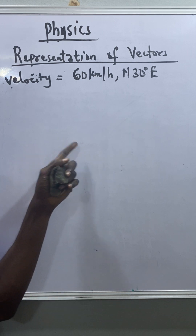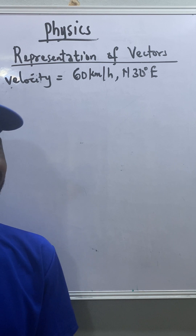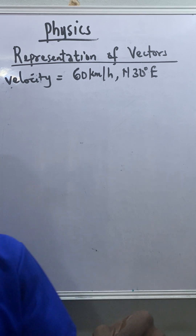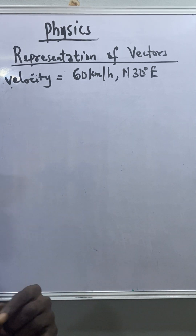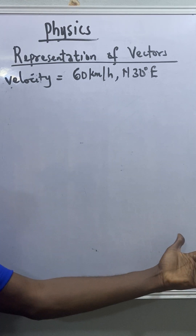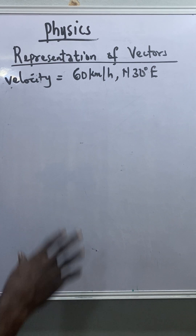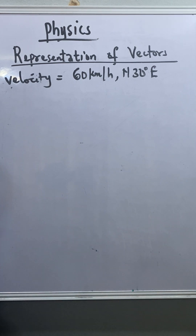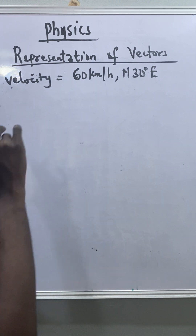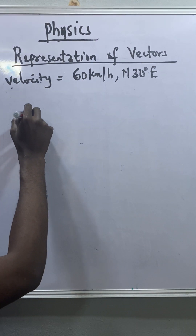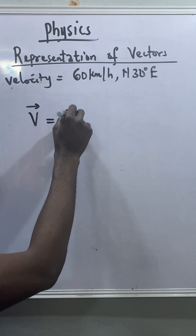From this diagram we can see that vectors cannot be added mathematically; we must follow a particular rule. That rule is called the parallelogram law of vector addition, which we will look at in the next video. Apart from using a diagram to represent vectors, we can also use letters, where each letter carries an arrow on top.